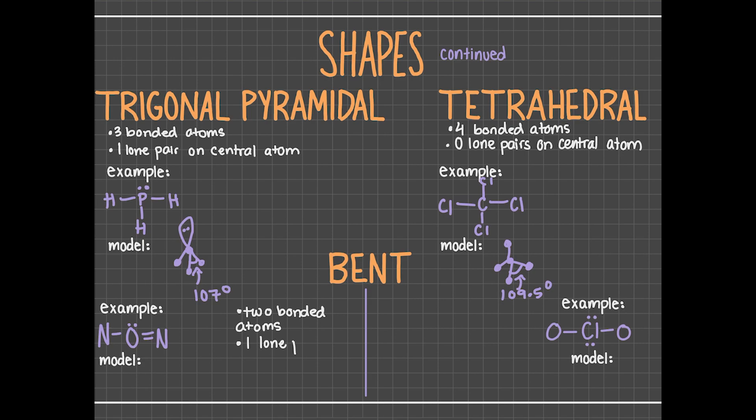Finally, we have bent molecules. Bent molecules may have two atoms bonded to the central atom and one lone pair on the central atom. This is what the molecule's 3D shape looks like, with one balloon shape drawn on the central atom to represent its one lone pair. Each bond angle measures about 117.5 degrees.